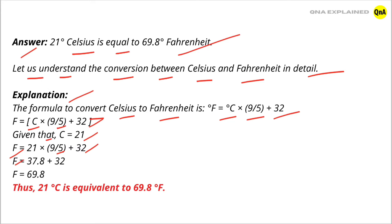Fahrenheit = 37.8 + 32, Fahrenheit = 69.8. Thus, 21 degrees Celsius is equivalent to 69.8 degrees Fahrenheit.